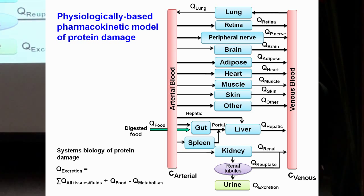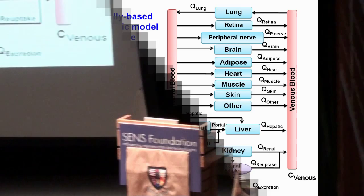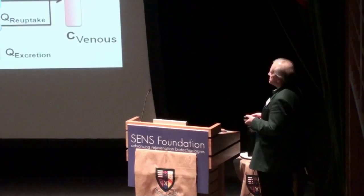As systems biologists, we want to produce a mathematical model for the entire balance between protein damage and excretion, measuring the steady-state levels of protein turnover in tissue — so we can explain the different tissue contributions to the flux of damaged amino acids excreted in urine, and assess the effect of aging, disease state, and any rejuvenation intervention.